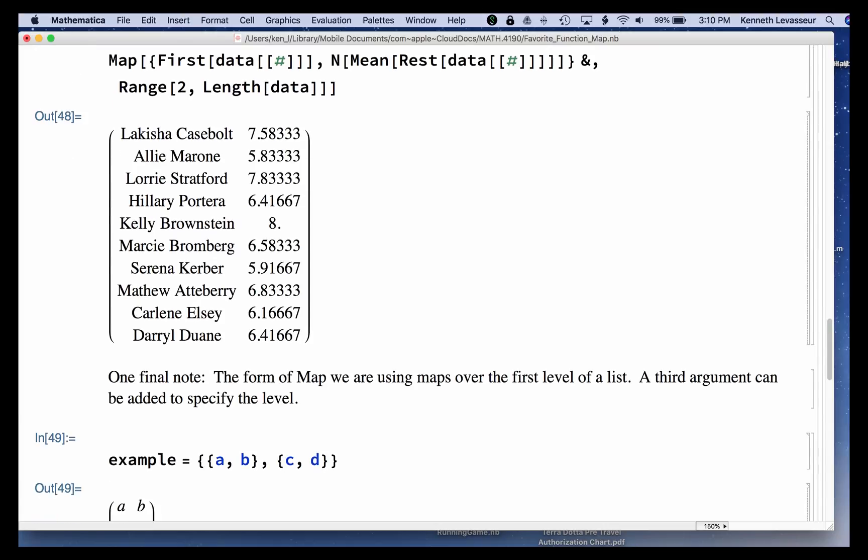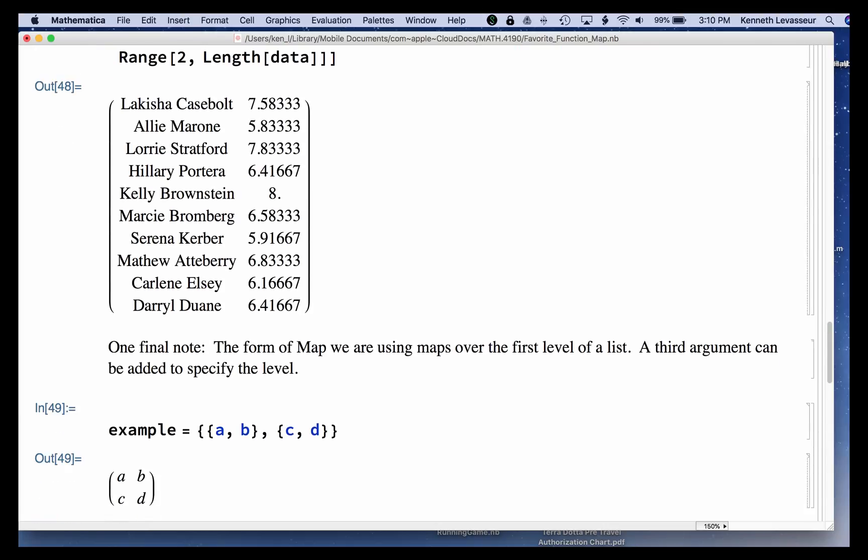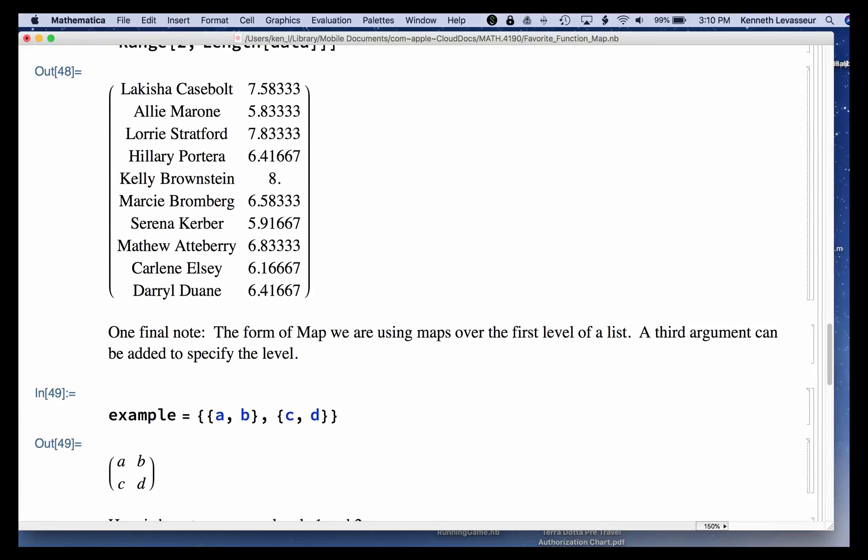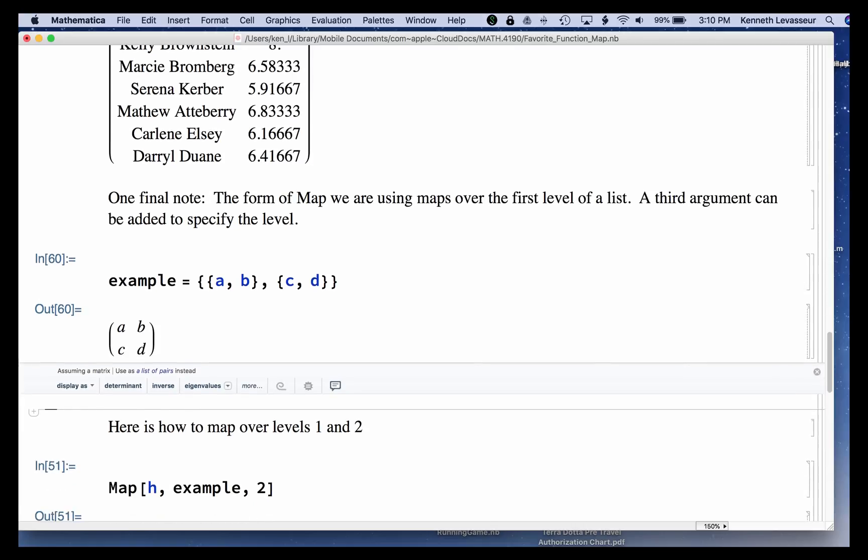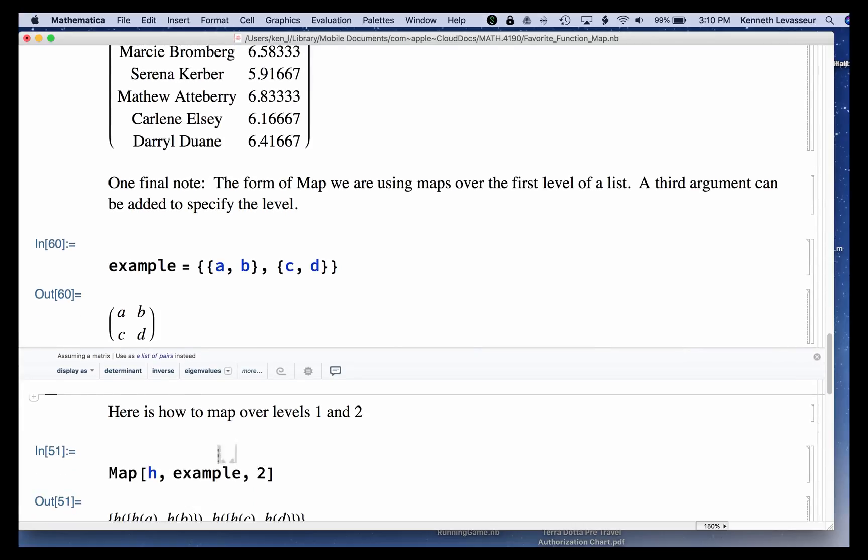Final thing, I want to show you an example using a third argument. Here's a, it actually looks like a matrix, it's just a list of two lists. And I can do a couple different things. If I have, I'm going to use h, which is not defined, but it's taken as a function, it's just not going to evaluate or anything. If I map h over the example, this example, and have, include the third argument as the number two, what that does is